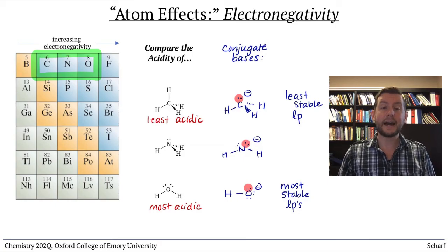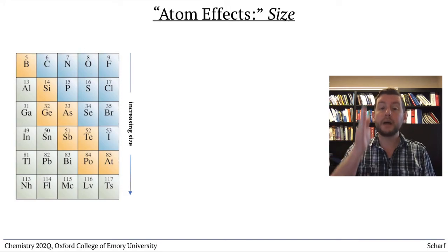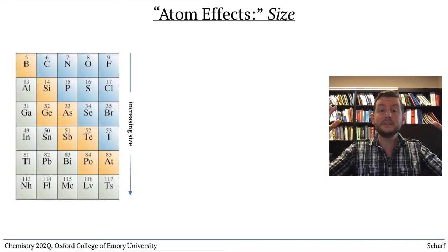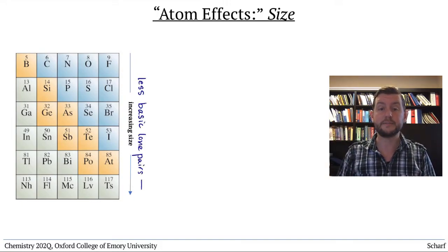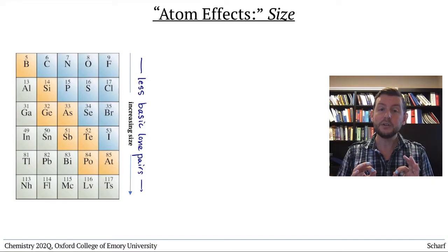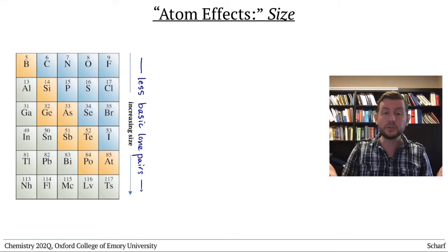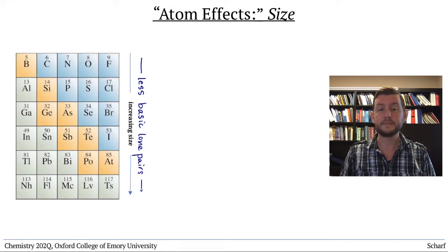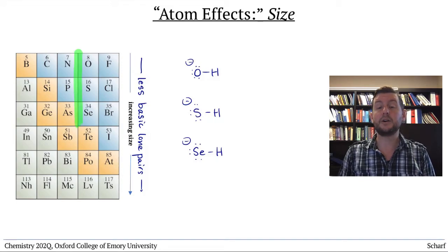The second atom effect is size, which applies when we are comparing atoms within the same column of the periodic table. In general, the larger an atom is, the less basic its lone pairs. The reasons for this are quite complicated, but a simplistic view is that the electron pairs like to be spread out around large atoms, so they tend to be less reactive toward acids. So comparing OH-, SH-, and SeH-, since selenium is the largest of the three atoms, its lone pairs are the least basic.